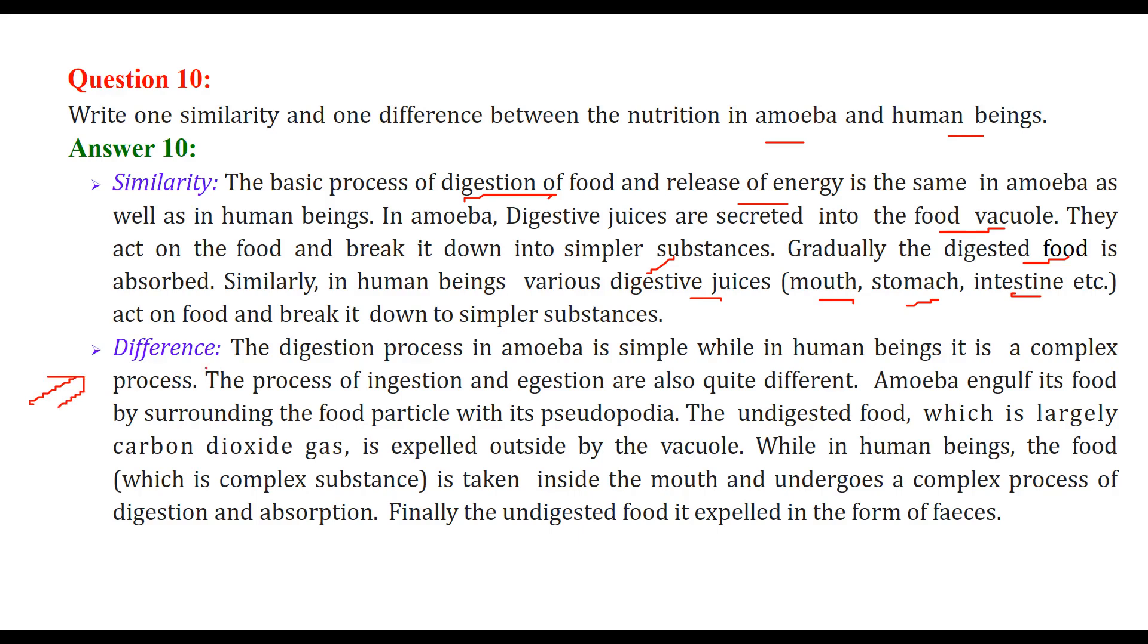But there are certain differences also. The digestion process in amoeba is very simple, but in human beings as you see, various organs are involved, so it's quite a complex process. The process of ingestion and egestion is also very different. Amoeba does what? It engulfs its food by surrounding the food particle with the pseudopodia.